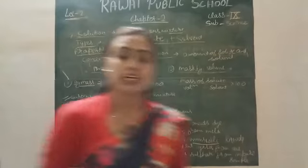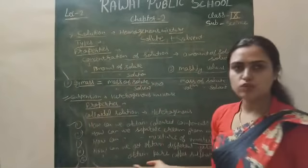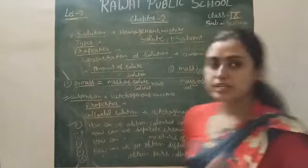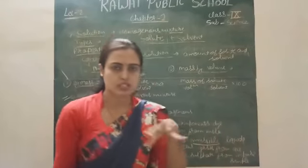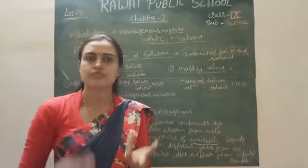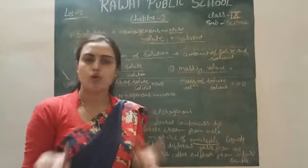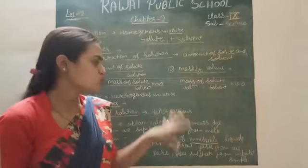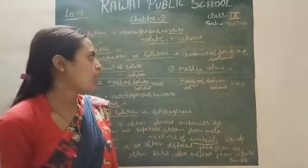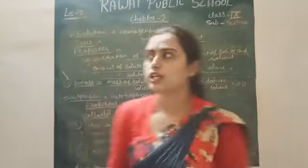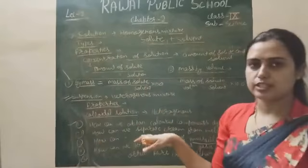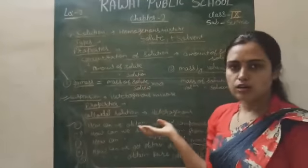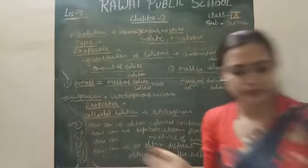To obtain pure copper sulfate from an impure sample, we use the process of evaporation. We heat the impure mixture, and the impurities are removed, leaving behind pure copper sulfate. These are the different techniques for separating different types of mixtures and understanding their properties. That's all for today.